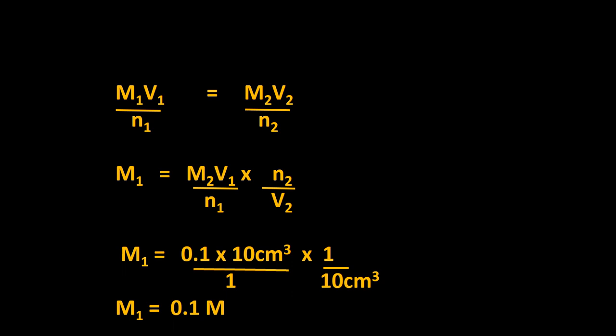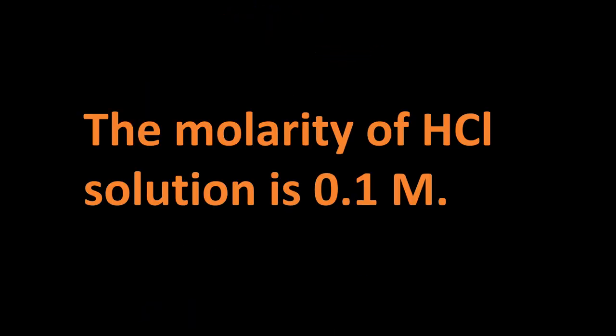Now we put the known values into the formula. All known quantities go on one side and the unknown M1 stays on the left side. Solving, we get M1 = 0.1 mol/dm³. So this is the molarity of the HCl solution. This statement is the result, and you must never forget to write the result separately in your practical write-up.